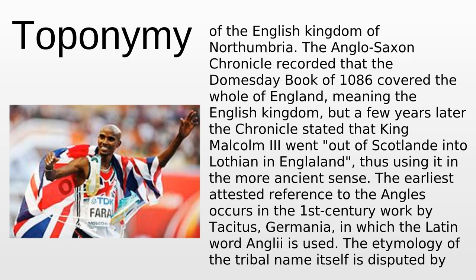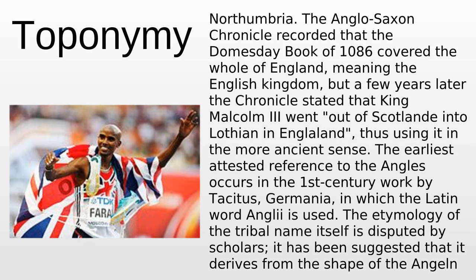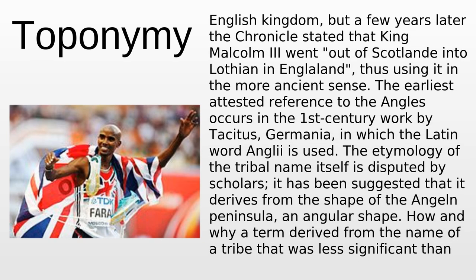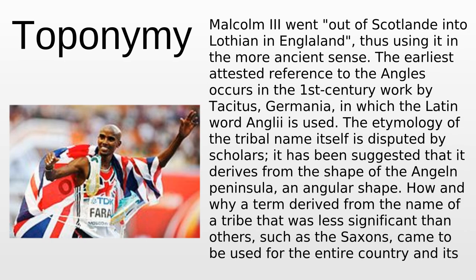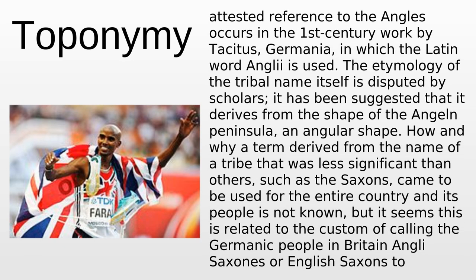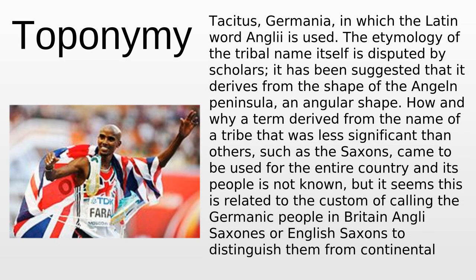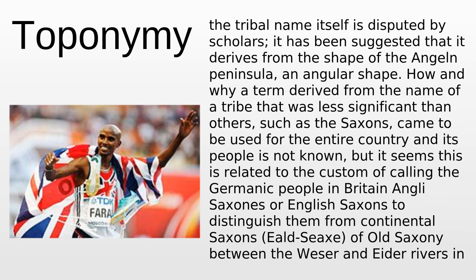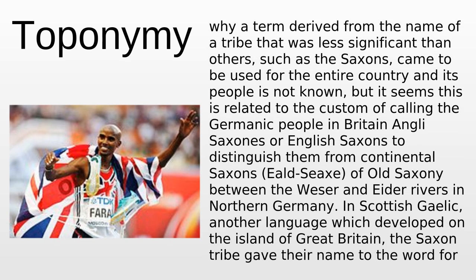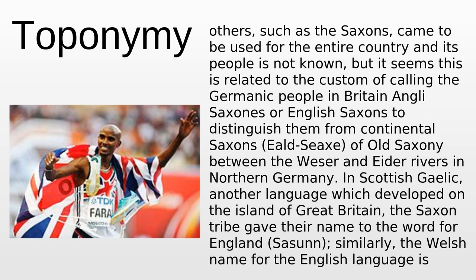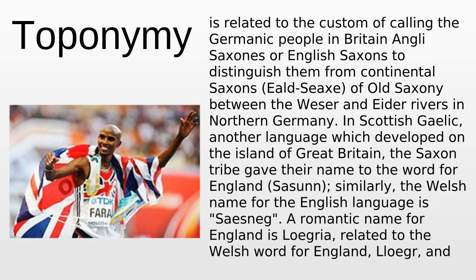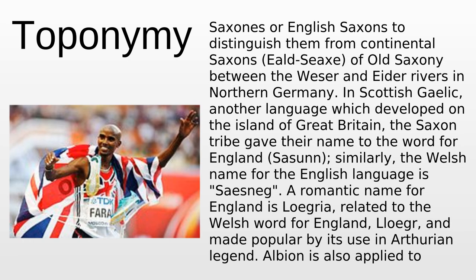The Anglo-Saxon Chronicle recorded that the Domesday Book of 1086 covered the whole of England, meaning the English kingdom. The earliest attested reference to the Angles occurs in the first-century work by Tacitus, in which the Latin word Anglia is used. The etymology of the tribal name is disputed by scholars. It has been suggested it derives from the angular shape of the Anglia Peninsula. How a term derived from the Angles, less significant than the Saxons, came to name the entire country is not known, but it seems related to calling Germanic people in Britain 'Angli Saxones' or 'English Saxons' to distinguish them from Continental Saxons.